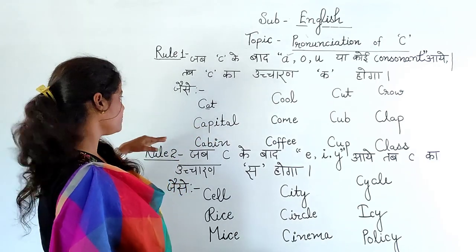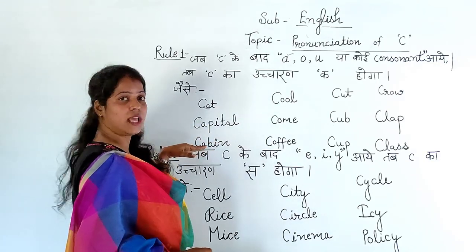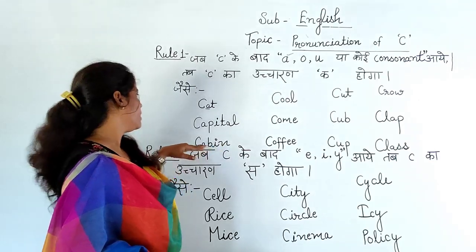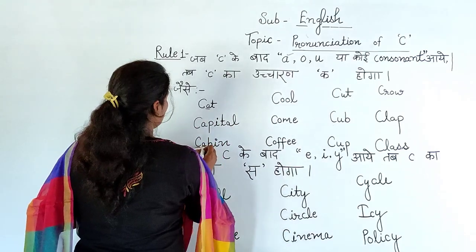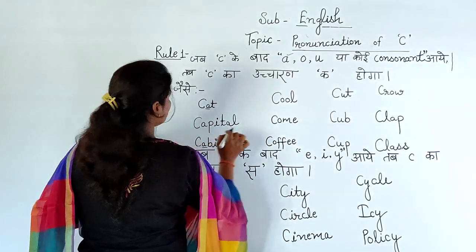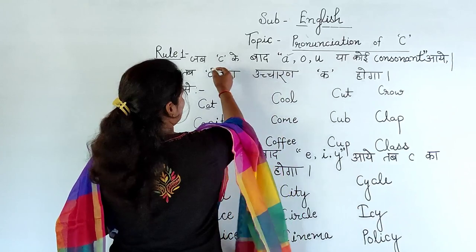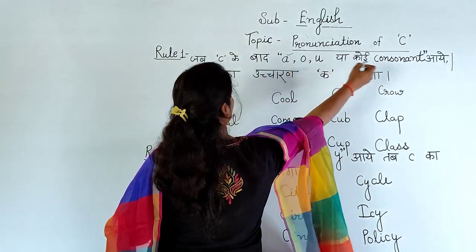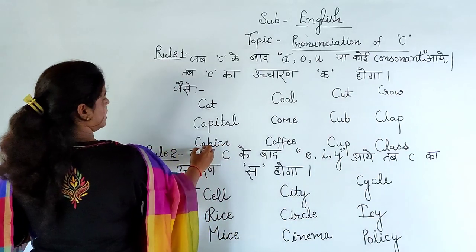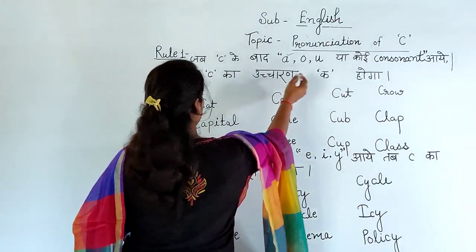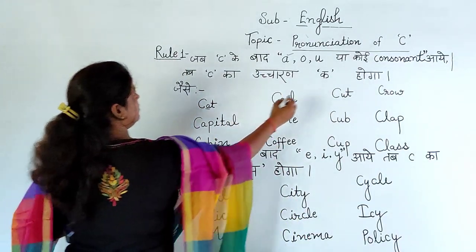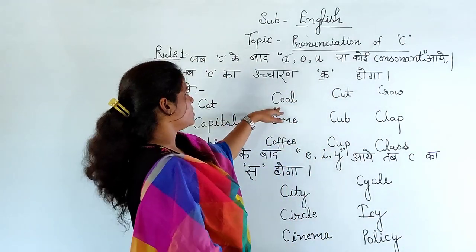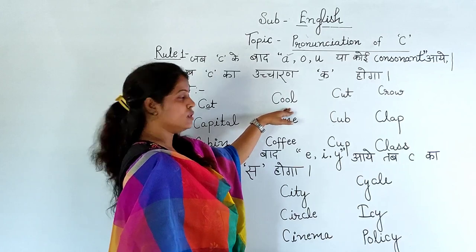Next word is Cabin — C, A, B, I, N. Here also after C comes A. So we will do the 'K' pronunciation of C. Okay? Now here see C-O-O-L — Cool. Okay?